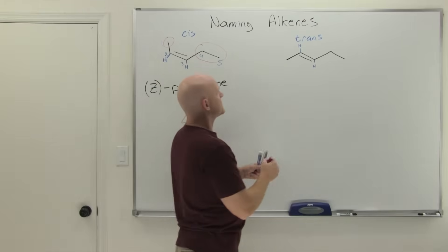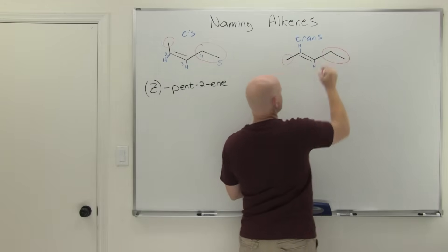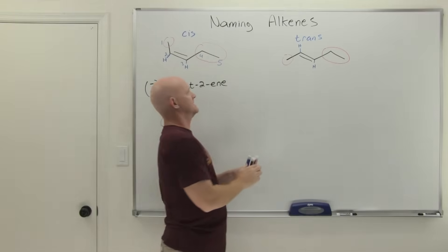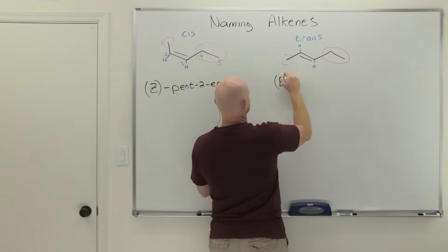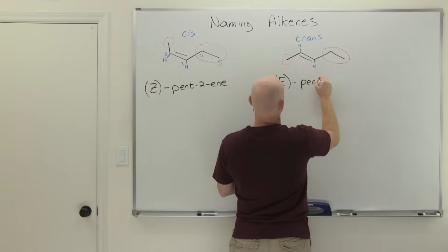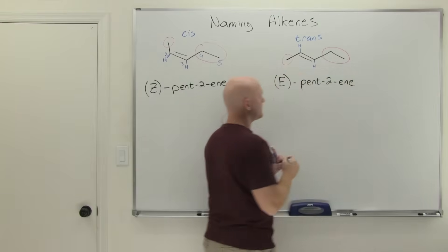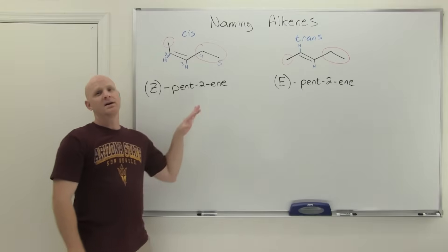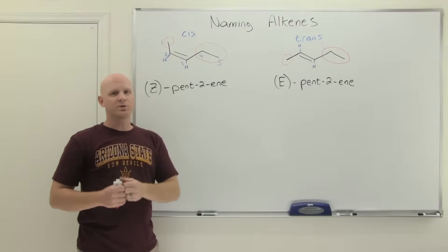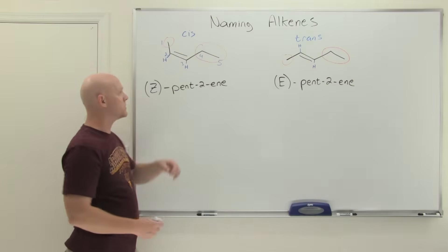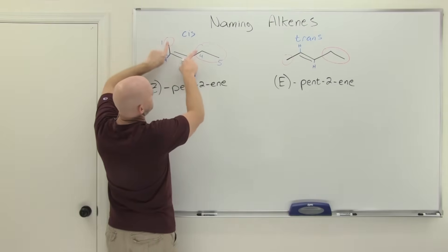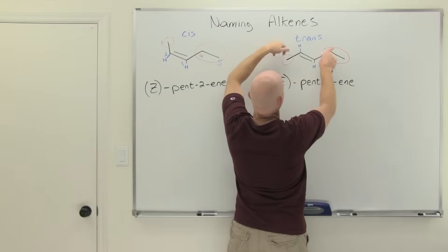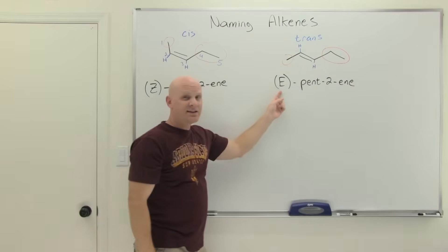On the other isomer, the two high-priority groups are now trans to each other — 180 degrees apart — so they're not cis. That corresponds to E. So that's how E/Z nomenclature works: apply the Cahn-Ingold-Prelog priority rules, identify your two higher priority groups, and if they're 60 degrees apart (cis), that's Z; if they're 180 degrees apart (trans), that's E.